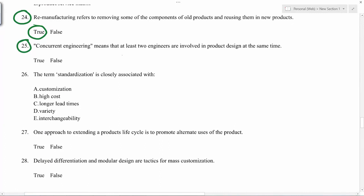Concurrent engineering means at least two engineers are involved in product design. That's not true. So concurrent engineering means bringing together people from manufacturing and product design. So that at the time of design, feedback from manufacturing is available.